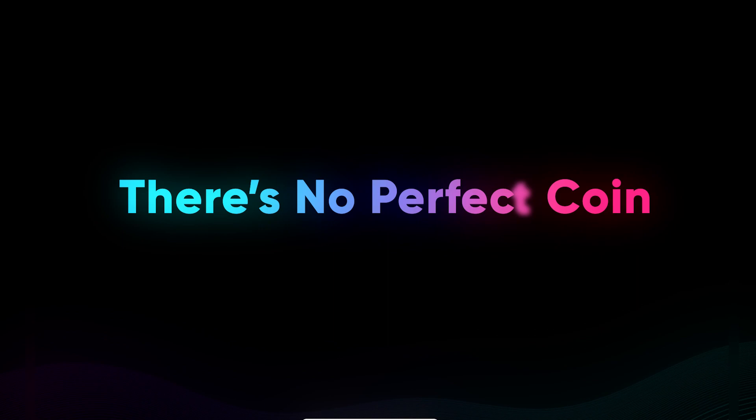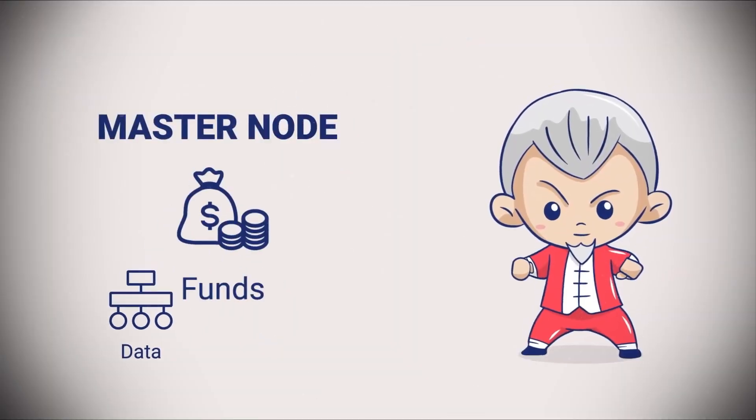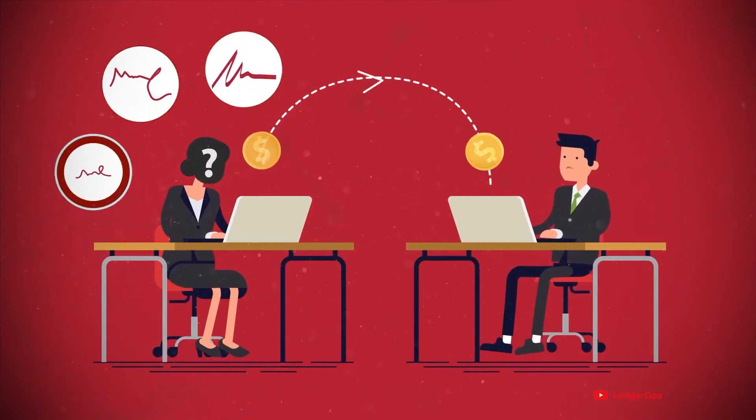There's no perfect coin. There are benefits and drawbacks to each private cryptocurrency. Even though it's one of the most scalable networks, Dash includes masternodes for mixing. Monero makes an effort to get around Dash's risks, but at the penalty of having incredibly sluggish transactions and offering no way to audit supplies.